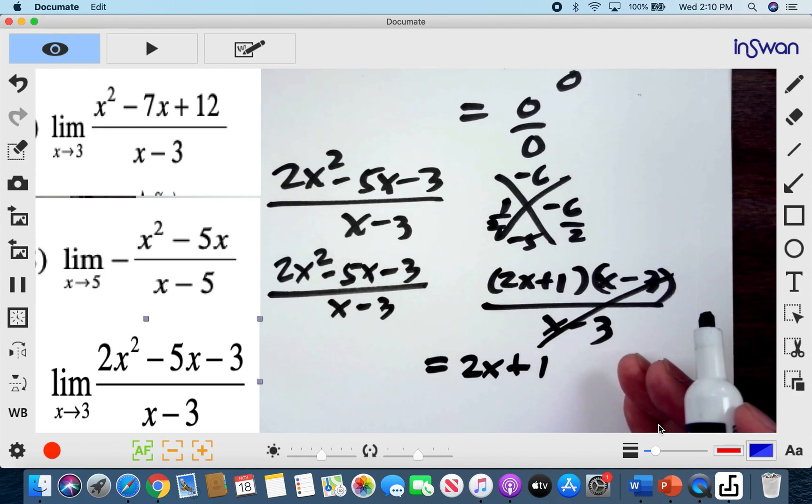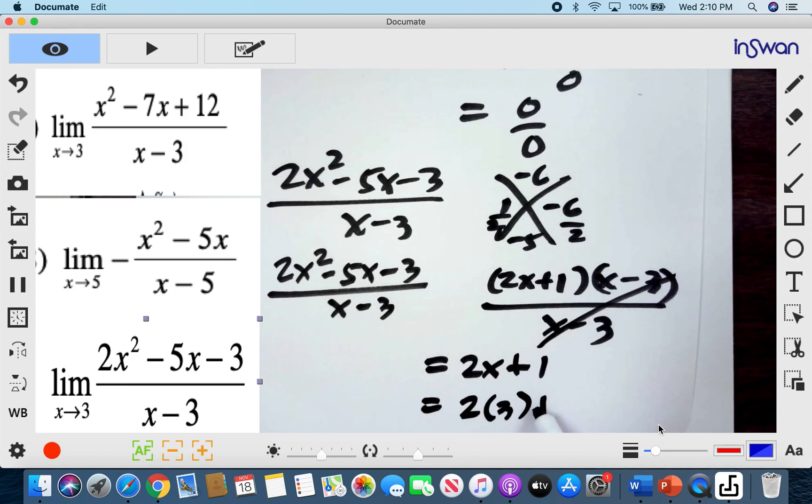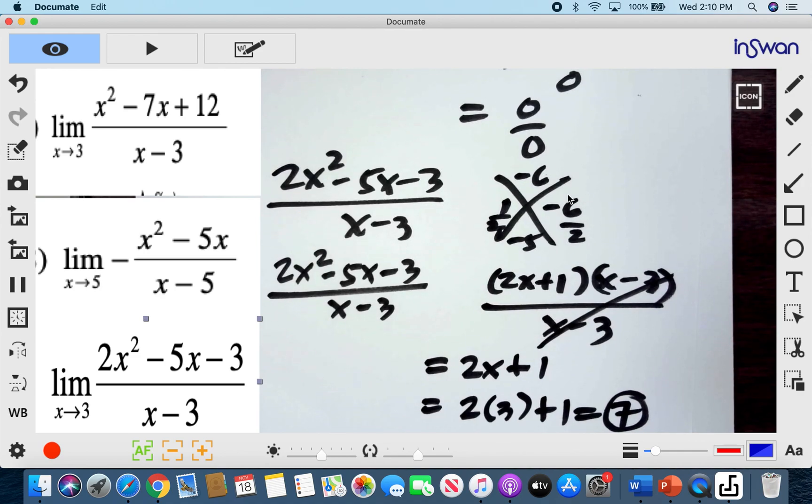But because we know that x is approaching 3, we can place 3 in place of x. And so therefore it gives us 7. And therefore when x is approaching 3, our y is approaching 7.